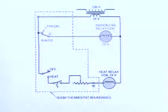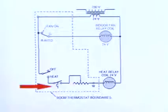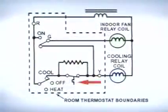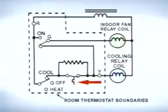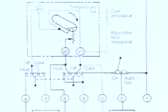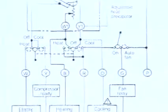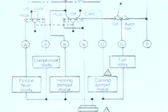The thermostat responds to changes in temperature by opening or closing sets of electrical contacts in an effort to maintain the desired temperature. A heating thermostat closes its contacts on a drop in temperature, while a cooling thermostat closes its contacts on a rise in temperature. When the system is set to the cooling position, current flows through the system switch to the cooling thermostat, which operates the cooling portion of the system.